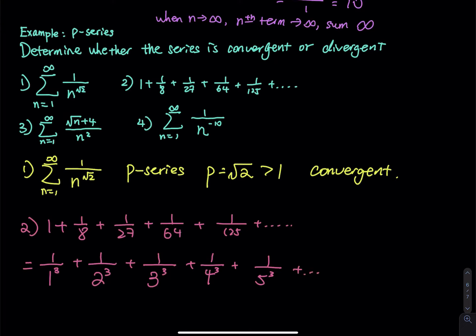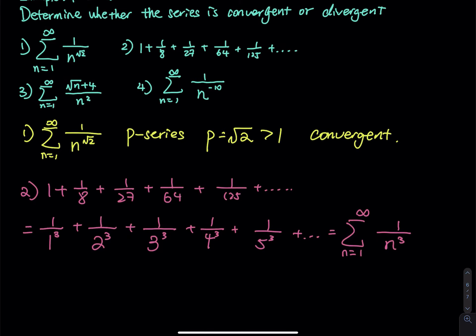Overall the pattern is 1 divided by the base raised to the nth power, where the base changes from 1 to infinity. This is a p-series where the power equals 3. Since 3 is greater than 1, the series is convergent. When the power is greater than 1, you are making the denominator so big that the sum is really determined by the first couple terms — by the time you reach the nth term, you are just adding zero to the partial sums. That's why the series is convergent.